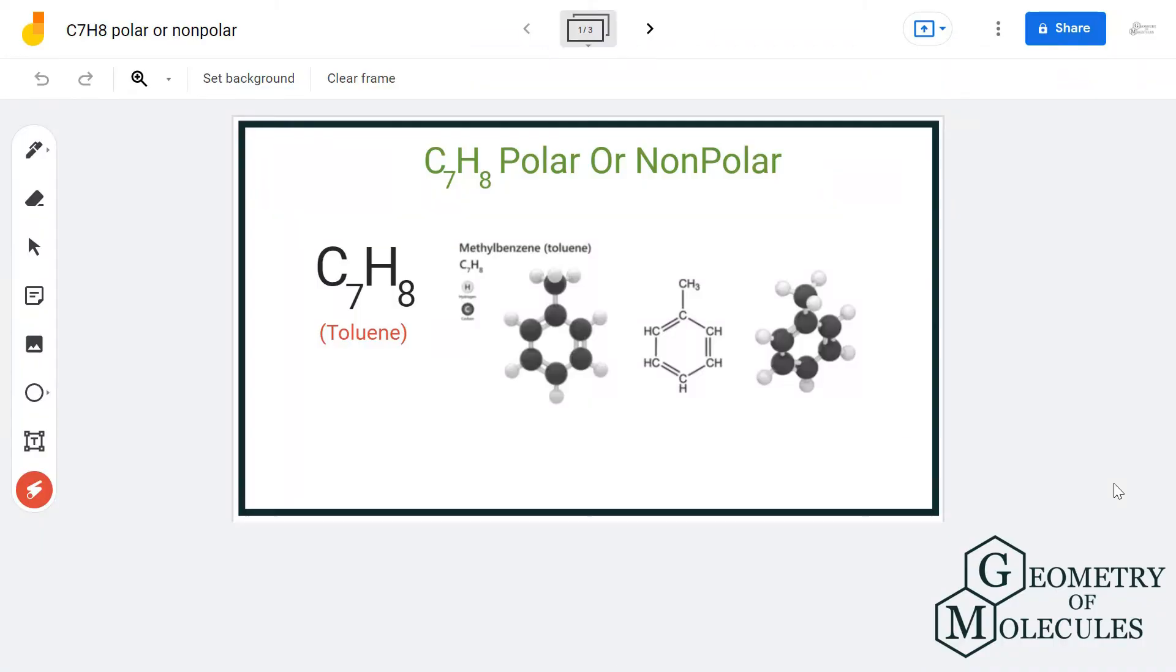Hi guys, welcome back to our channel. In today's video, we are going to help you determine if toluene, or C7H8, is a polar or non-polar molecule. If you look at its Lewis structure, it's a cyclic hydrocarbon.